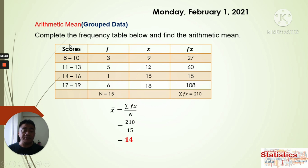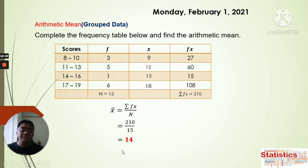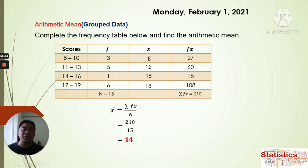Remember that for grouped data, it's not just one value we are accounting for. All 15 data values collected have an arithmetic mean of 14. We assume the midpoint represents each group — for example, values in the first range are represented by 9, and so on — and therefore the arithmetic mean is 14.